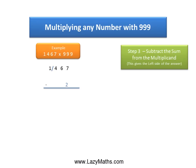The next step involves subtracting the 2 from 1467. 1467 minus 2 gives us 1465, and 1465 becomes the left-hand side of the answer.